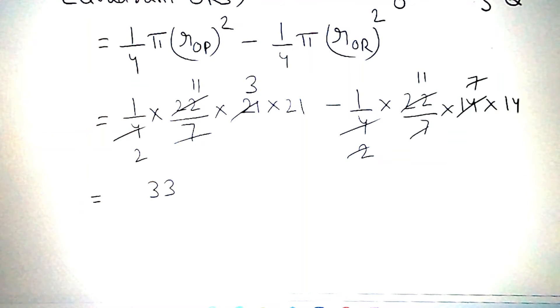So, 11 into 3 is equal to 33 into 21 by 2 minus 11 into 14 meter square. On multiplying, we get 693 by 2 minus 154 meter square.